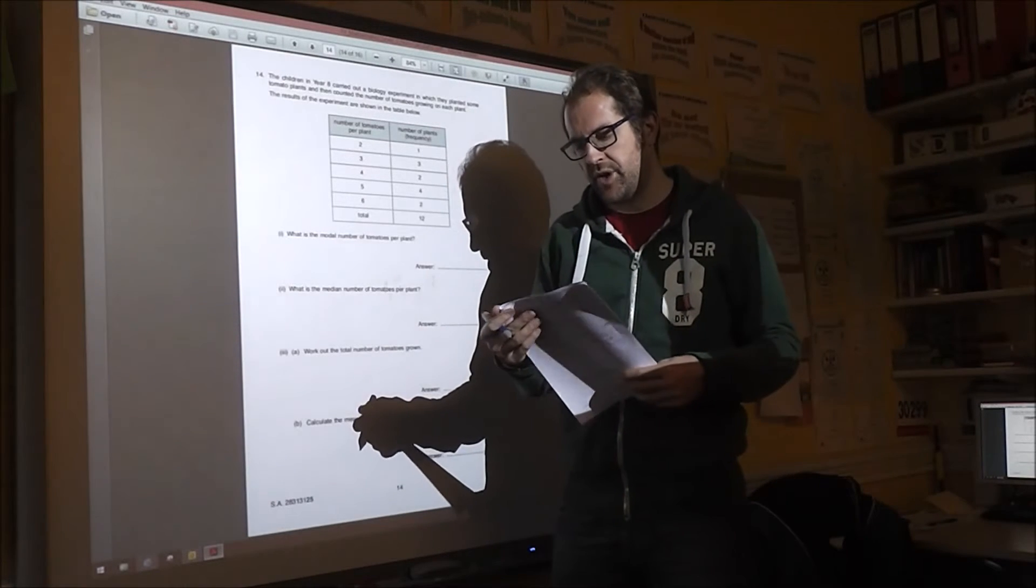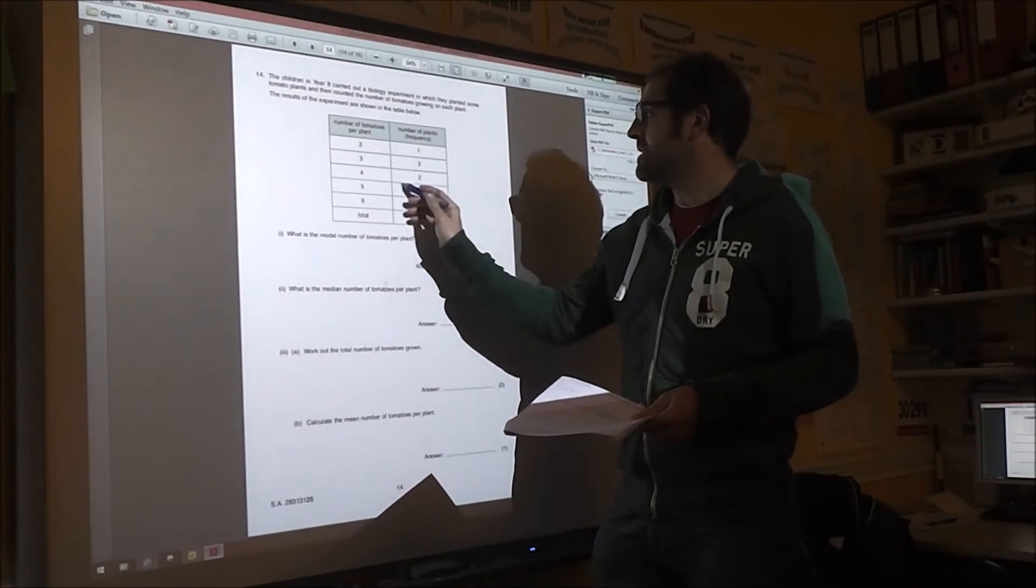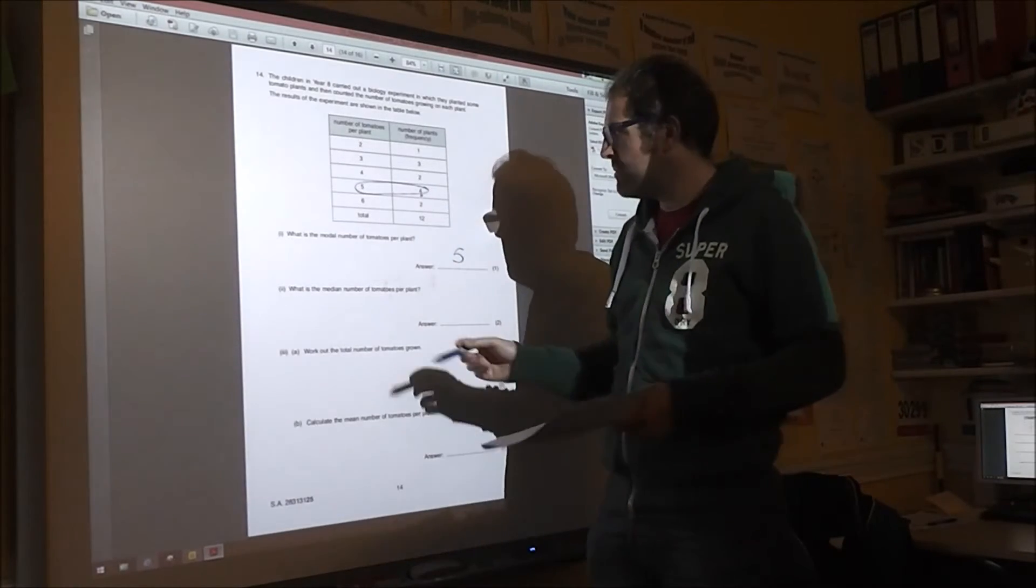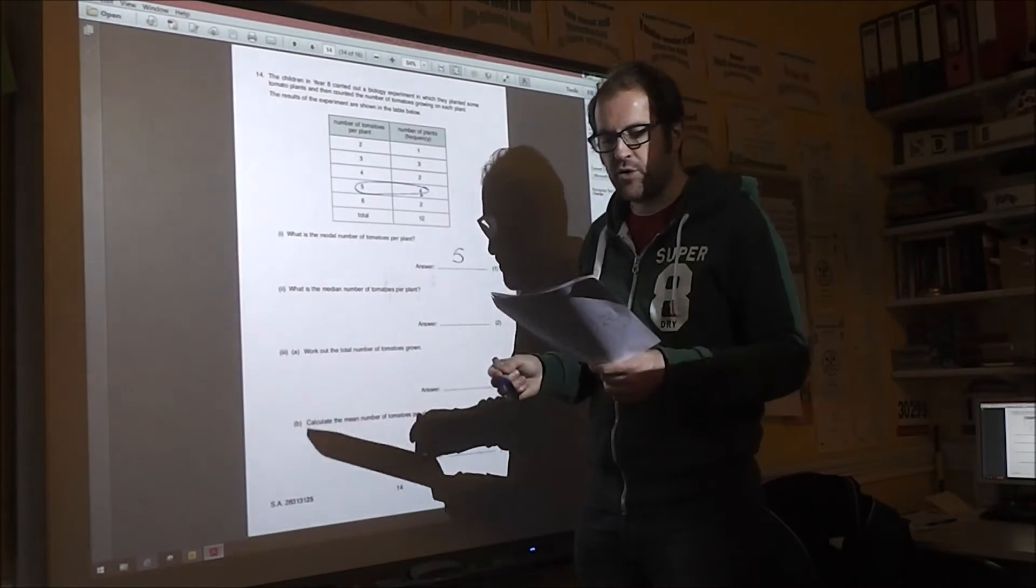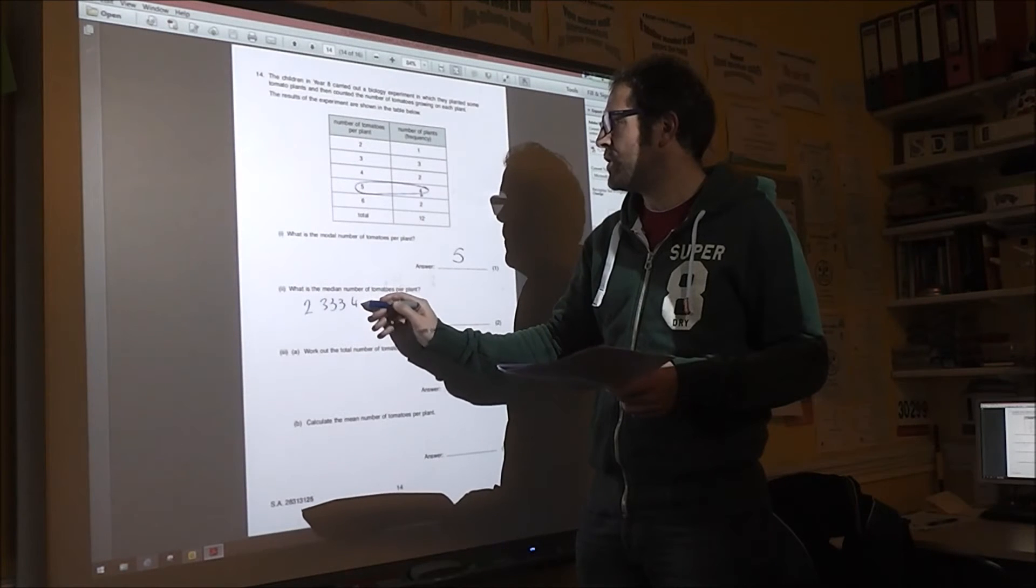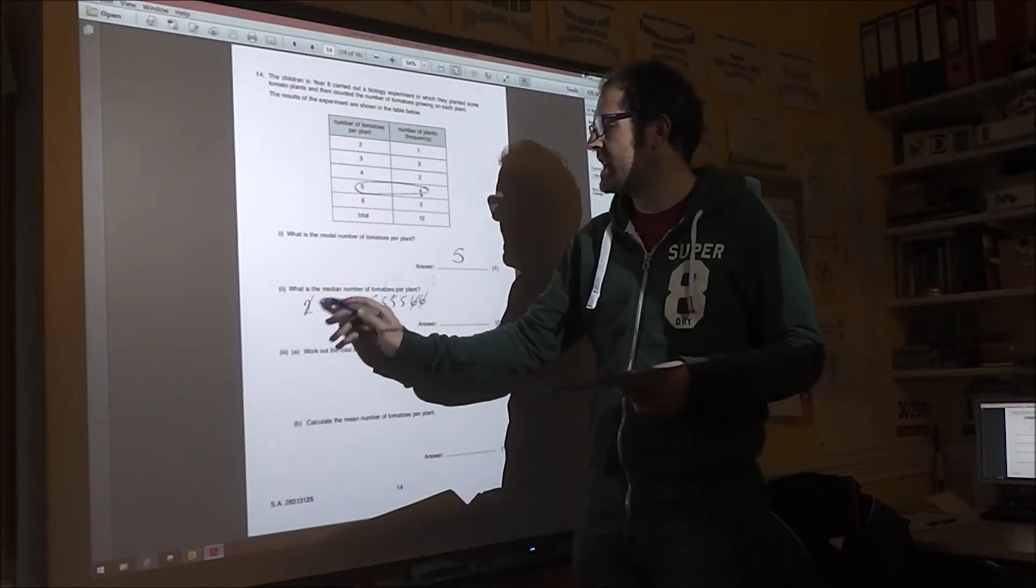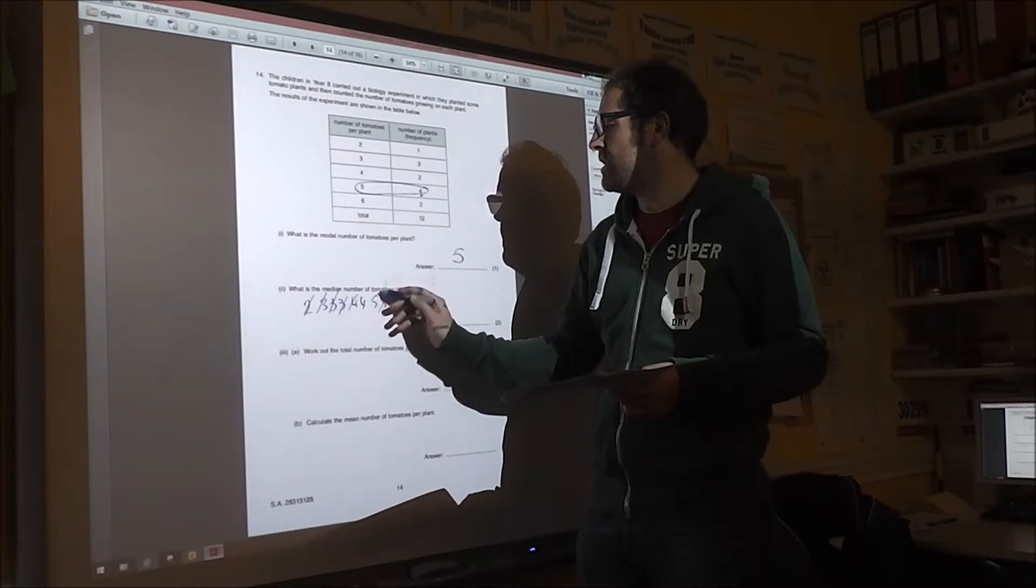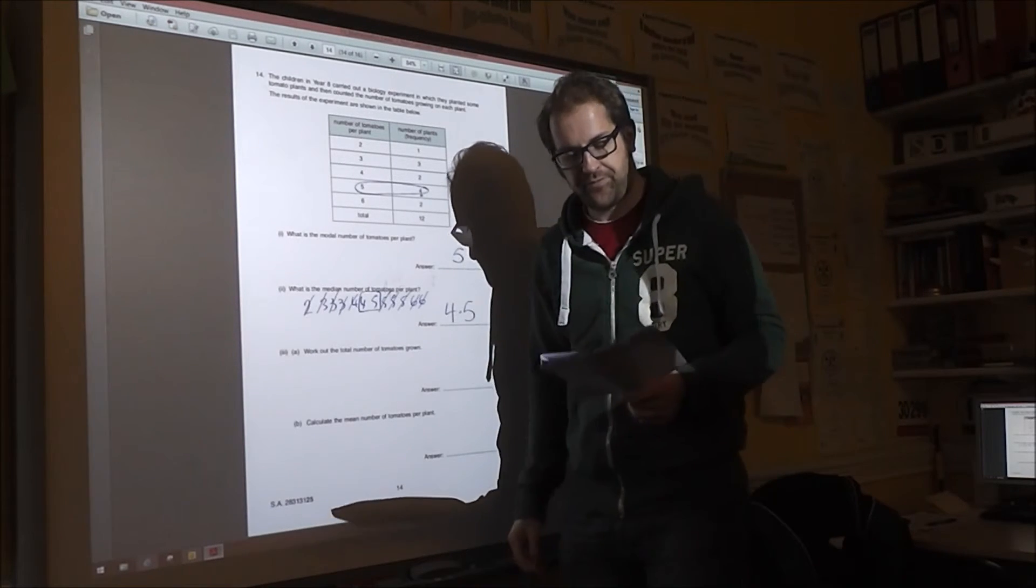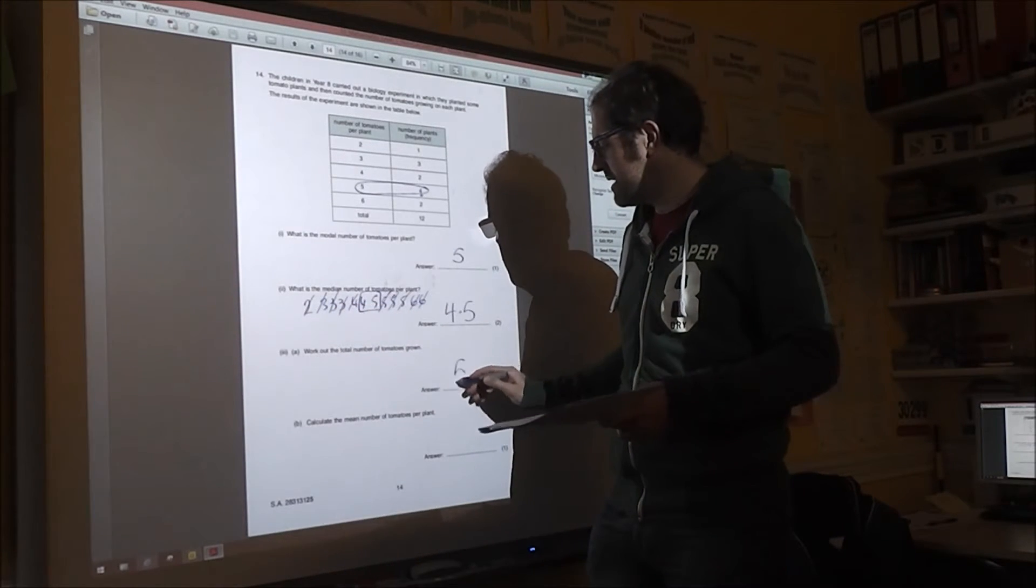Question 14 is about frequency tables and averages. The modal, the most common, is that one there because it happens four times. So it's five tomatoes. It's the most common. For the median, you can either be clever and work it out from the table or if in doubt, write them out. So you've got one two, three threes, two fours, four fives, and two sixes. And then cross them off from each end until you get to the middle two. Now four and five are both in the middle. So the median is halfway between them, which is 4.5.